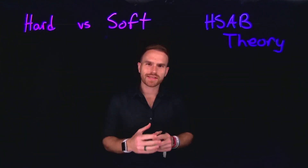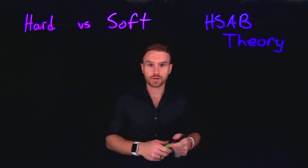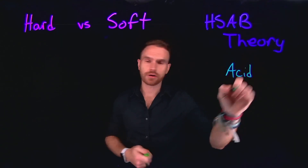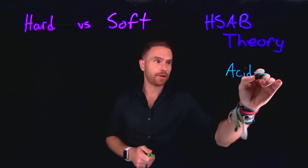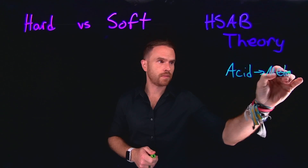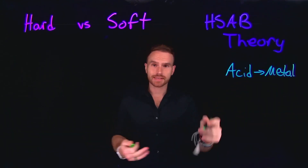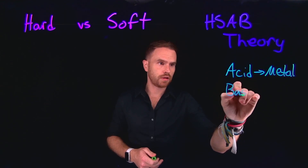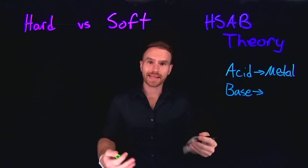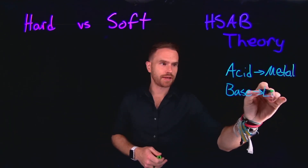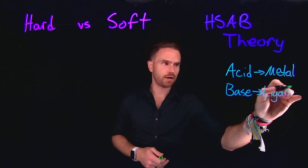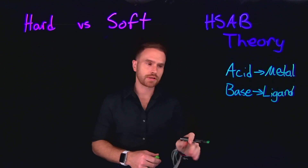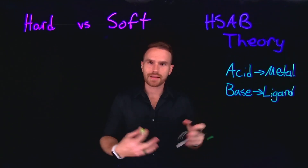Once we can distinguish between Lewis acids and Lewis bases — the acids we're mostly dealing with are going to be metals, and the bases, which are electron donors, are what we call ligands. This is different from the term ligand used in biochemistry. A Lewis base is any electron pair donor.